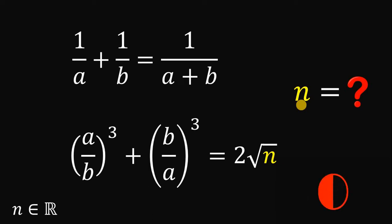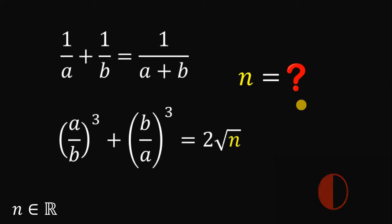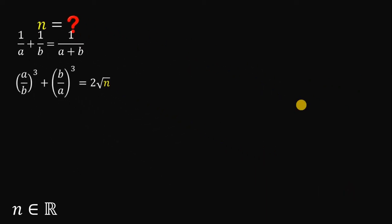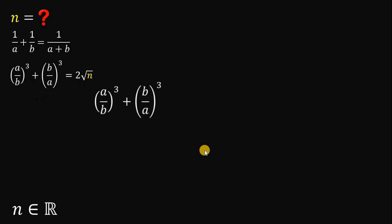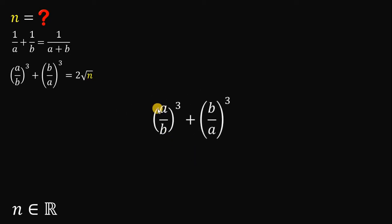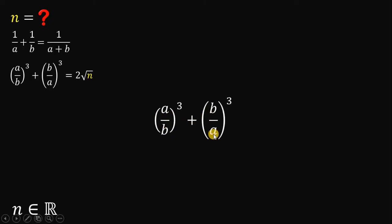Now let's answer this question together. Our goal is to find the value of the variable n. First, consider the expression we want to evaluate, which is equivalent to 2 times the square root of n. So we have a over b cubed plus b over a cubed — this reminds me of an identity, which is what we call the sum of two cubes.